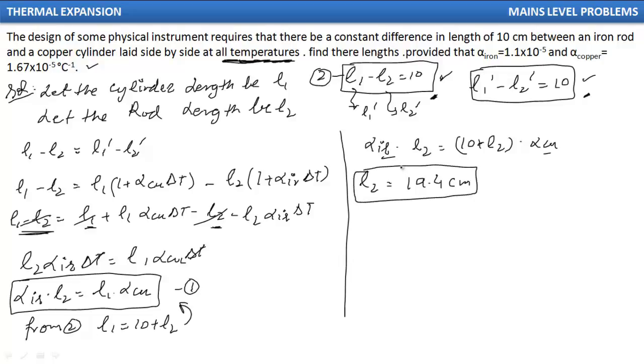And this is the length of iron rod. But what did we have to find? We had to find their lengths. We completed half the task. We found the length of iron rod. Now we have to find the length of copper cylinder too. So what will we do? From relation 2, we know L1 is 10 plus L2.